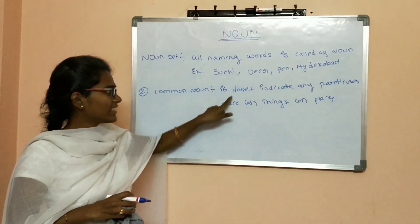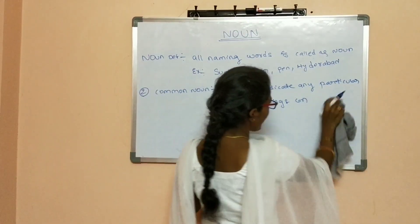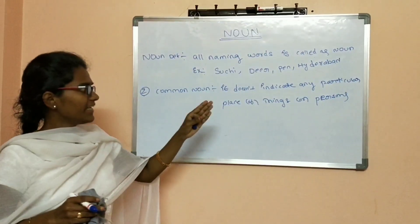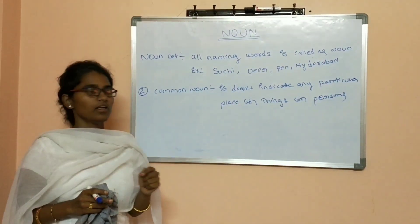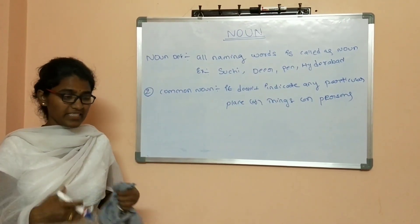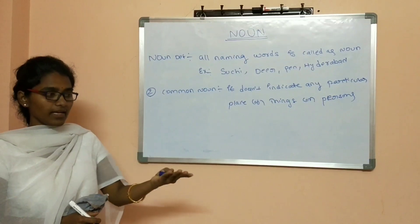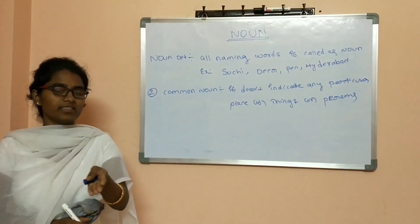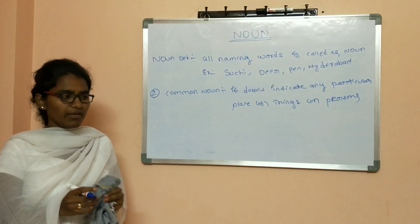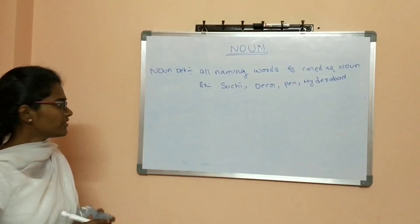What is a Common Noun? It does not indicate any particular place, thing, or person's name. What is the difference between a common noun and a proper noun? Proper noun means we are specially mentioning it — for example, it is a marker pen. There are many pens available — gel pen, normal pen, black or blue — we don't know which. If we say 'I want a gel pen,' it is a proper noun. 'I want the pen' — that is a common noun.